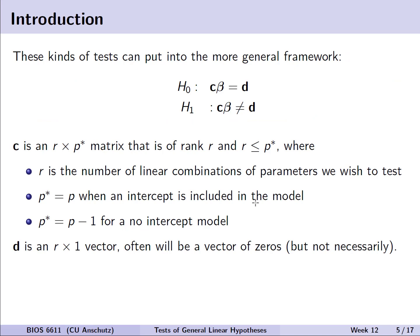These tests can be put into an even more general framework using matrices and vectors. We have the null hypothesis C times our beta vector equals D, where C is an r by p star matrix that is of rank r, where r is less than or equal to p star. r is the number of those linear combinations of parameters that we wish to test. p star will be equal to p when an intercept is included in the model, but if we're working with a no-intercept model, we'll use p star equal to p minus 1.